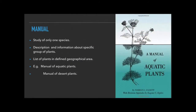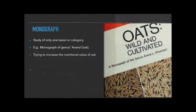Manual is a book in which we study only one species or a specific group of plants. It can be about aquatic plants, desert plants, or terrestrial plants. When we collect information about a specific group of plants in a defined geographical area, we call it a Manual — for example, Manual of Aquatic Plants, Manual of Desert Plants, Manual of Terrestrial Plants.